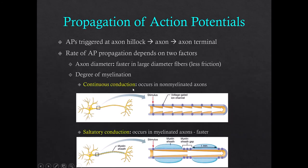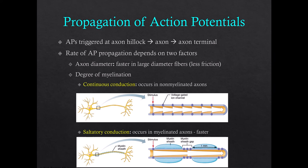Action potentials can be propagated — they can be replenished and spread from the axon hillock all the way down the length of the axon to the axon terminals, where neurotransmitters will be released. How fast the action potential spreads depends on two things: how big the axon is, and whether the axon is myelinated or not. In larger axons, the electrical current will encounter less friction and so the signal will travel faster. In unmyelinated axons, there are voltage-gated ion channels the whole length of the axon, so the action potential has to be replenished all along the axon — this is continuous conduction and is the slower of the speeds.